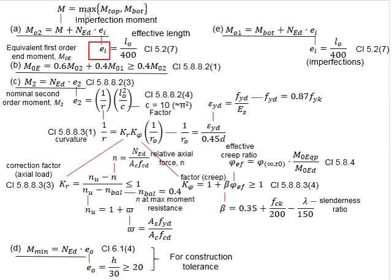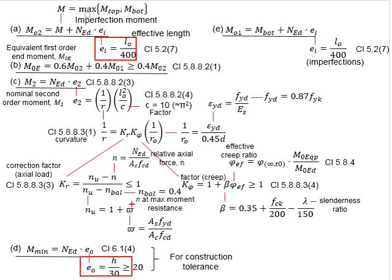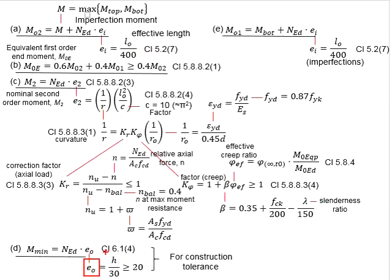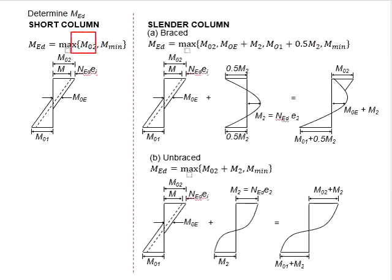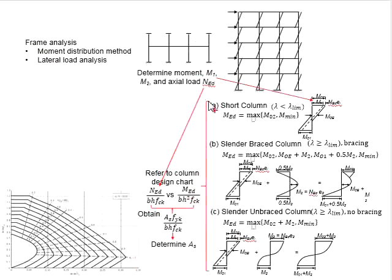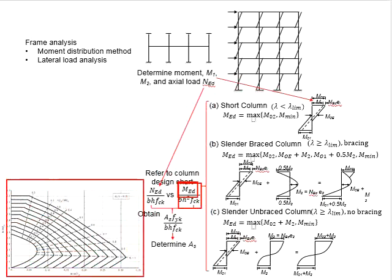The eccentricity e_i, referring to the Eurocode, is determined by the effective length divided by 400. Note that e_i and E0 are different in terms of their formulas. e_i is determined with respect to the effective length of the columns, while E0 is determined based on the size of the column. Try not to get confused with the eccentricities. The larger value of M02 and M_min will be used as the M_ED, which will be substituted into the formula and used within the column design chart.